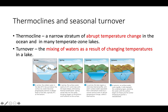In summer, a distinct thermocline develops again — that zone of very abrupt temperature change. You can see above the thermocline temperatures of 22 and 18 degrees, then suddenly dropping to 8 and 4 degrees Celsius. Then in autumn, turnover occurs again: as the water cools to four degrees Celsius, the thermocline disappears, and again oxygen moves to the bottom and nutrients come to the top.